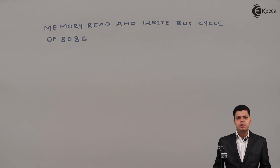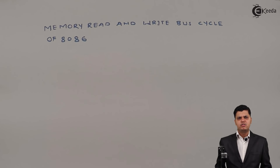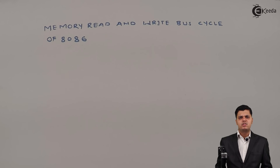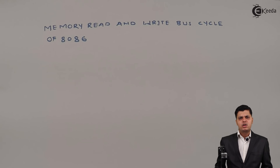Hello friends, we are going to start memory read and memory write cycle for the 8086 microprocessor. When the microprocessor performs an operation, it fetches some instructions — the fetching is done by the bus interface unit (BIU), while execution is done by the execution unit. The execution unit takes input instructions from the instruction queue available in the BIU. The BIU provides all the instructions required to be executed, and it consists of machine cycles.